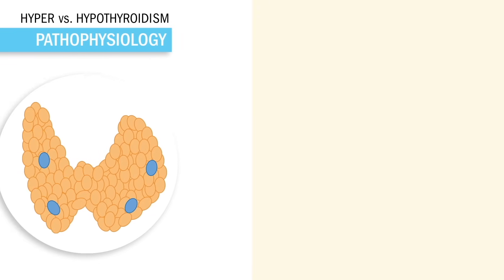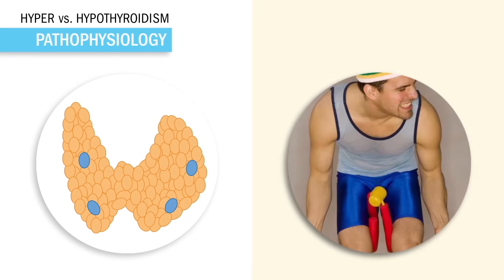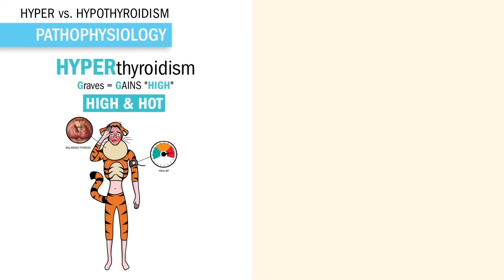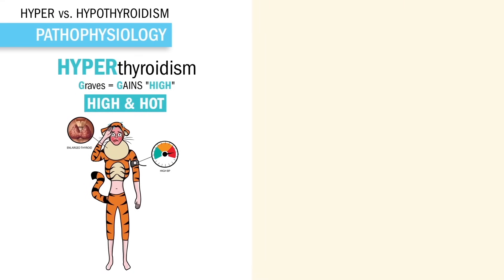Alright guys, let's wrap up hyper versus hypothyroidism. The easiest way is to let the name help you. Think 'thigh' in thyroid is like a thigh master — you use a lot of energy, since the thyroid creates high energy and high metabolism for the body. So in hyperthyroidism, think high energy and high metabolism. This is also called Graves disease — we call it Gaines disease — high and hyper energy.